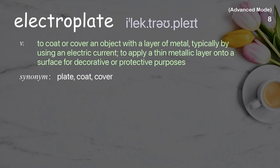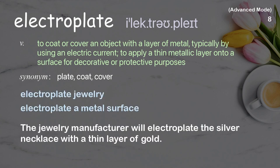Electroplate: to coat or cover an object with a layer of metal, typically by using an electric current to apply a thin metallic layer onto a surface for decorative or protective purposes. Examples: electroplate jewelry, electroplate a metal surface. The jewelry manufacturer will electroplate the silver necklace with a thin layer of gold.